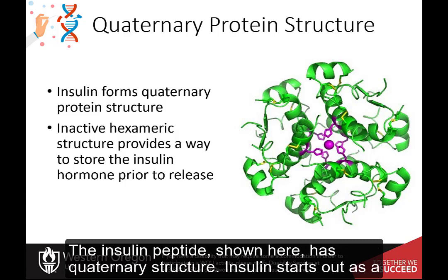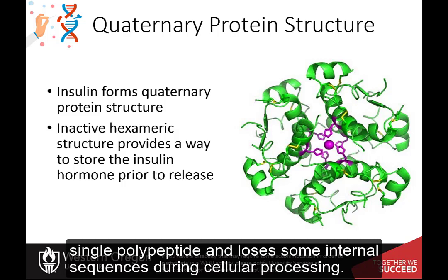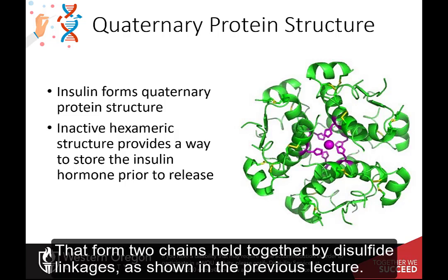The insulin peptide shown here has quaternary structure. Insulin starts out as a single polypeptide and loses some internal sequences during cellular processing, forming two chains held together by disulfide linkages, as shown in the previous lecture.